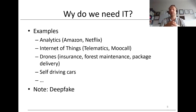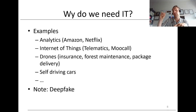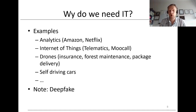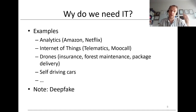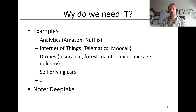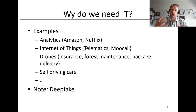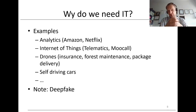Drones can also be used for forest maintenance — for example, continuously monitoring which trees are about to die. Amazon is also contemplating using drones for package delivery. Think about self-driving cars and the impact they will have on the taxi industry. These are all examples of how IT disrupts existing business models but also creates new opportunities.